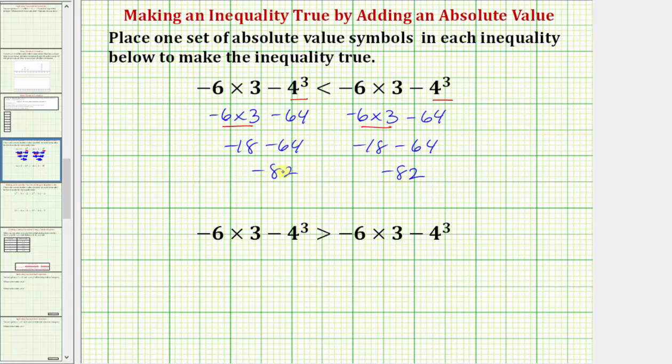So again, we want the left side to be less than the right side. We know negative numbers are always less than positive numbers, which means if we were to include the right side of this inequality in a set of absolute value symbols here, when simplifying it would look like this. Notice for our last step we would have the absolute value of negative eighty-two, which is positive eighty-two, which would make this inequality true. We'd have negative eighty-two is less than positive eighty-two, which is true.